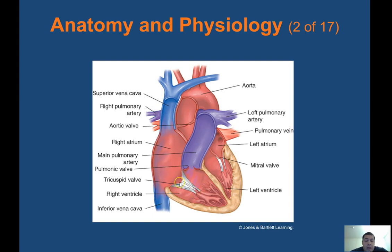You have four valves in your heart. The tricuspid valve is right between your right atrium and right ventricle. Then you have your pulmonic valve between the right ventricle and your lungs — it takes blood back into your lungs to get it oxygenated, then it comes back into the left atrium. It goes through the mitral valve and back down to the left ventricle.